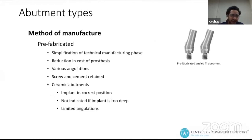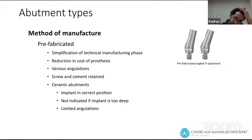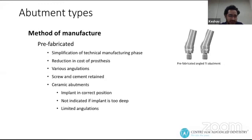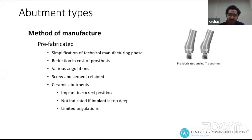Depending upon the method of manufacture, abutments can be either prefabricated or customized. Prefabricated abutments are simple to manufacture, reduce the cost of the prosthesis, and are available in various angulations. They can be screw or cement retained. However, care must be taken to place the implant in the prosthodontically correct position, as too many angulations are not available, and prefabricated abutments are not indicated when the implant is placed too deep.